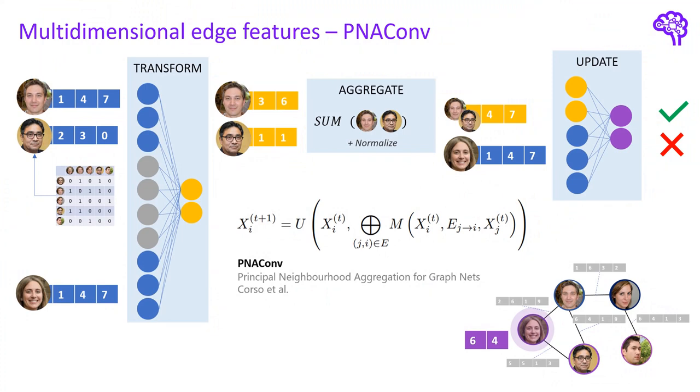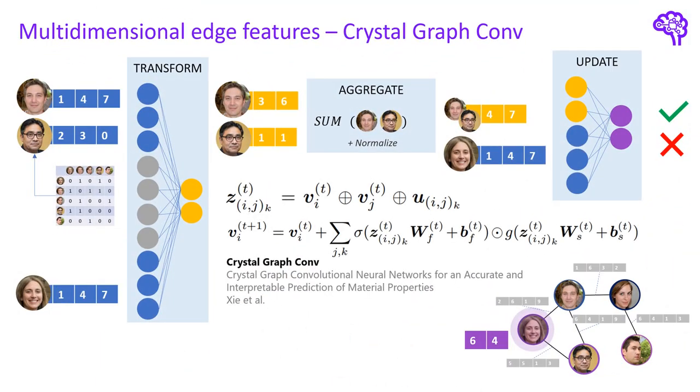A similar idea can be found in the paper Principle Neighborhood Aggregation for Graph Nets. Here we also simply include the edge features into the transformation step as it's shown here. The paper about crystal graph convolutional nets uses the same approach and we can easily see how the edge features, denoted with u here, are concatenated with the node features v in order to obtain a vector for each node edge node triple. This combined vector is then again transformed by multiplying it with a learnable weight matrix.